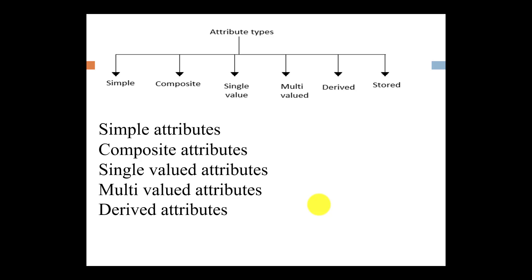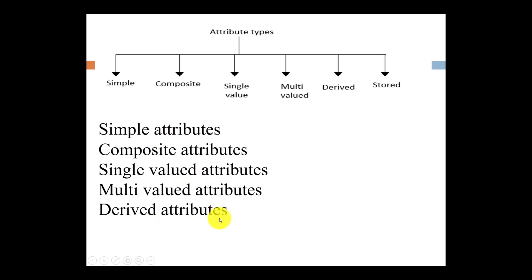Now let's understand the types of attributes. Attributes have the following types: simple attributes, composite attributes, single value attributes, multi-value attributes, and derived attributes. Let's understand each type one by one.